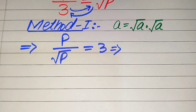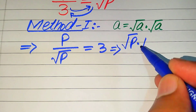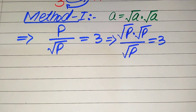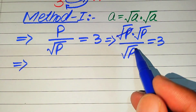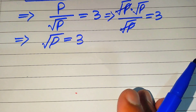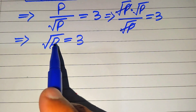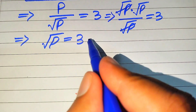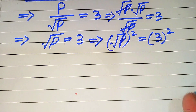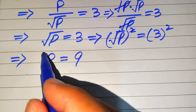According to this rule, we write p as square root of p multiplied by square root of p, divided by square root of p, is equals to 3. The square root of p cancels out, giving us square root of p is equals to 3. To solve for p, we remove the square root sign by squaring both sides: square root of p, whole squared, equals 3 squared, giving p equals 9.